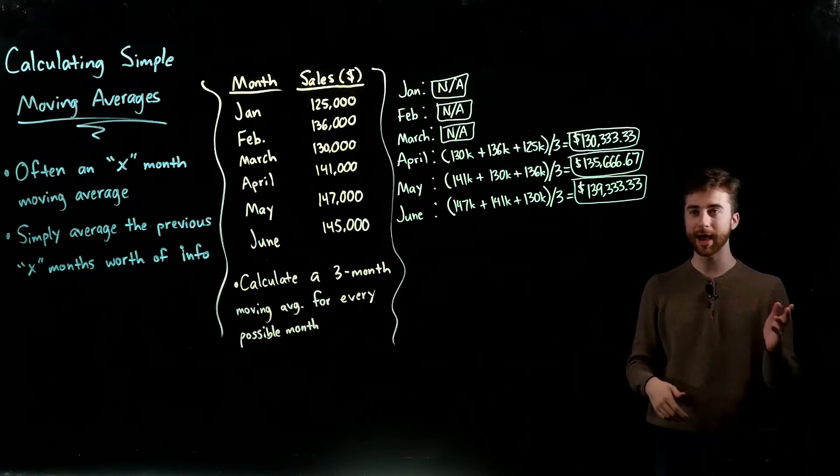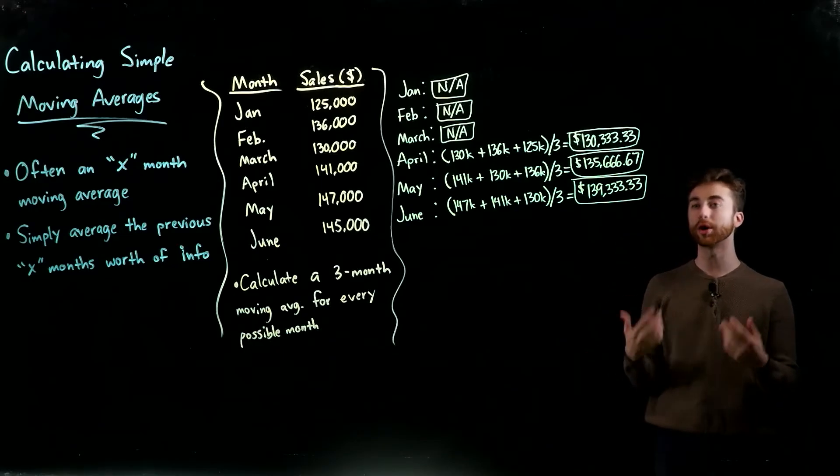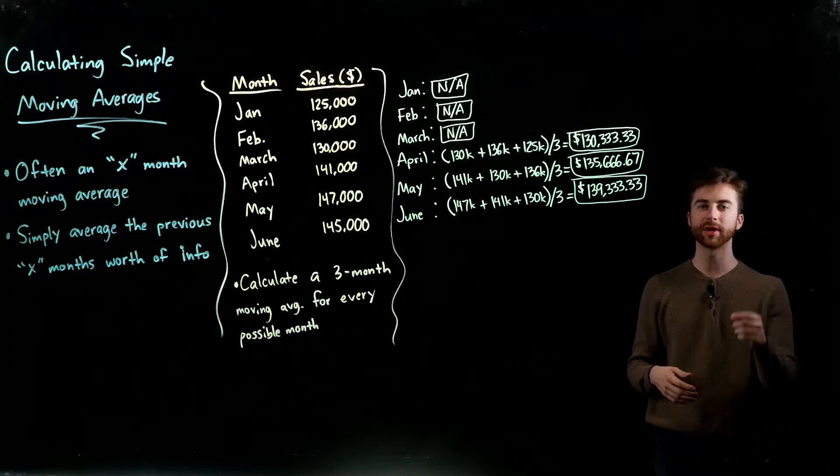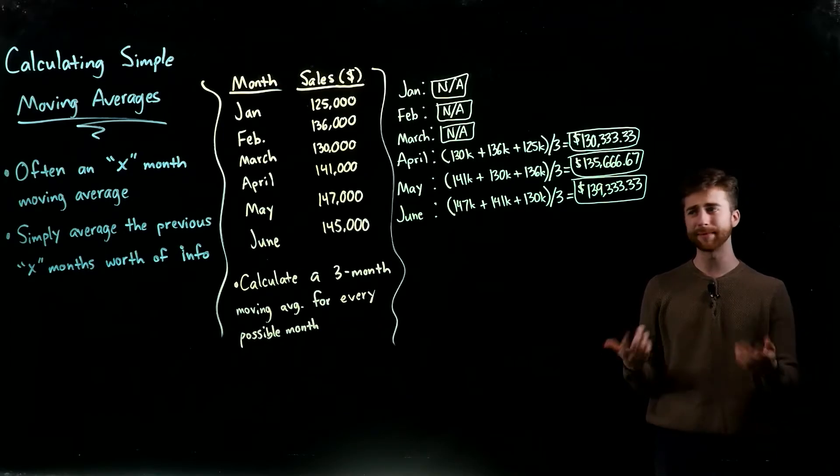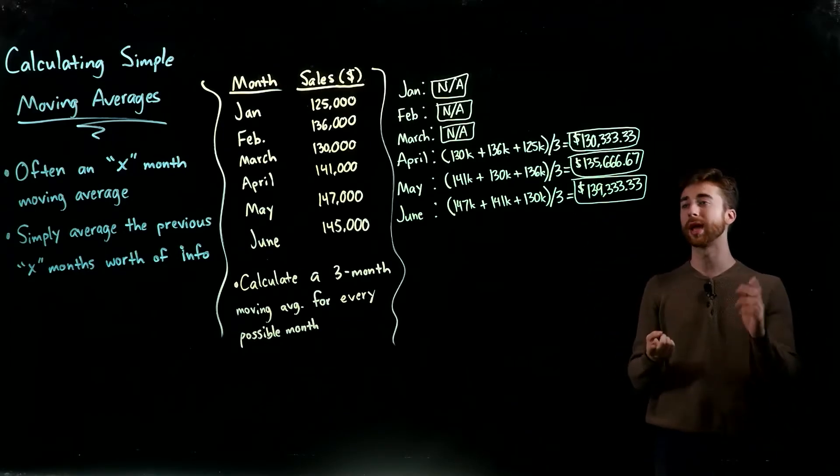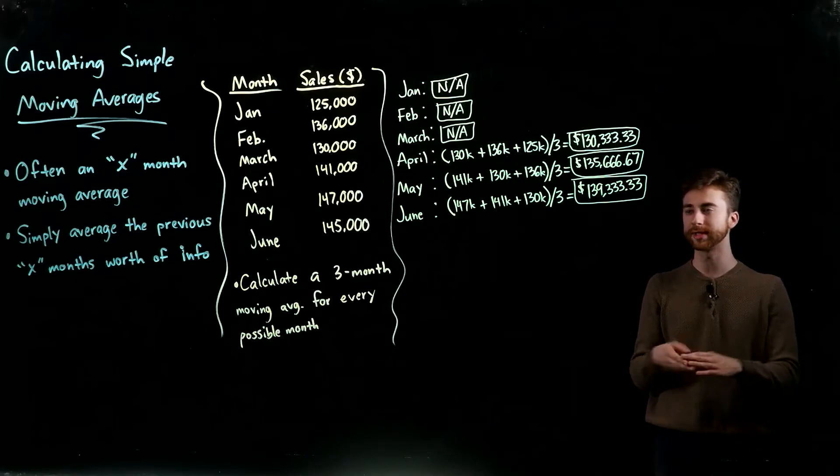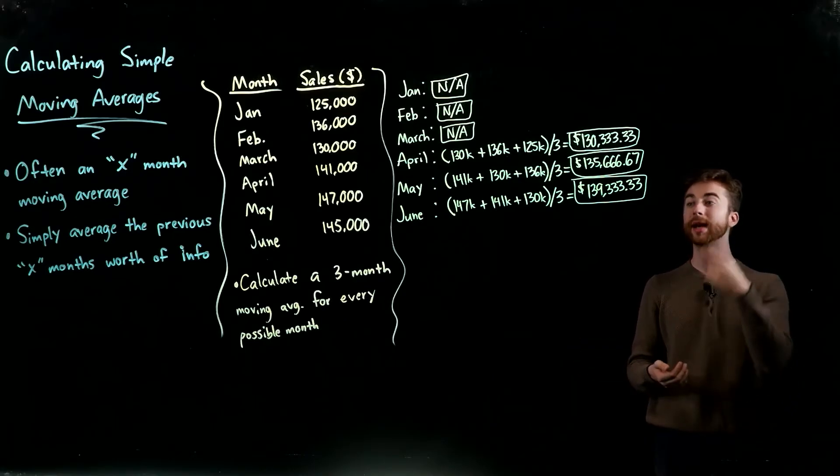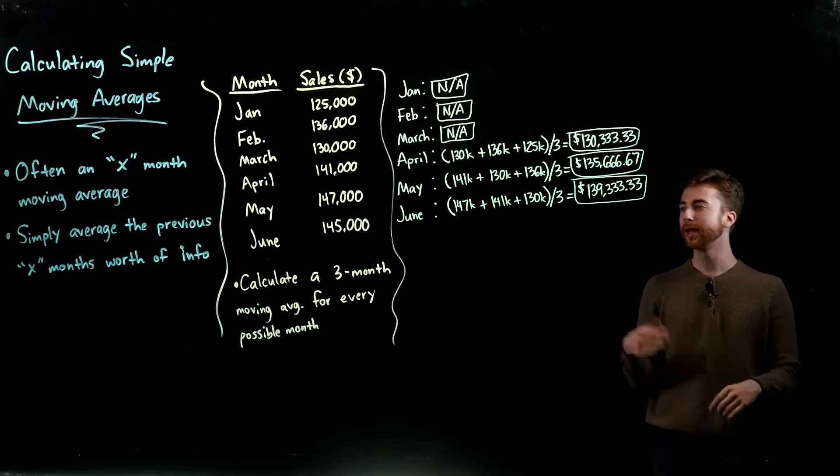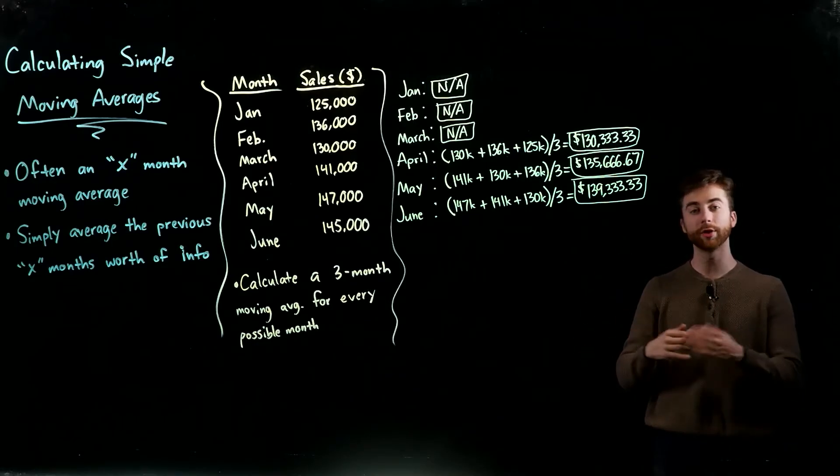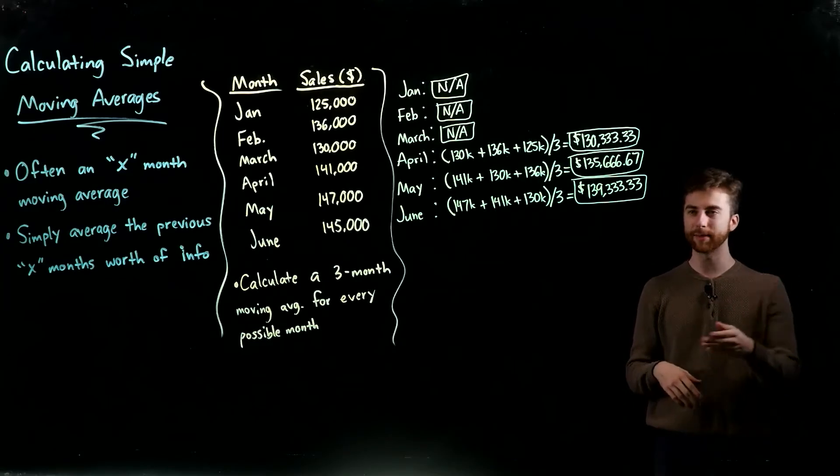That's going to give you $130,333.33. You do the same thing for May—just take the previous three months. So we have 141, 130, 136, add them together, divide by three. That gives you your May figure. The exact same thing for June: just take 147, 141, and 130 from your previous three months, divide by three, and that gives you your moving average for that month.